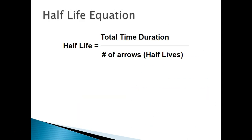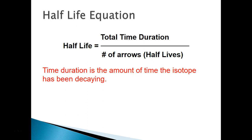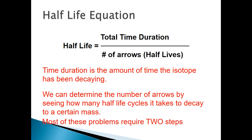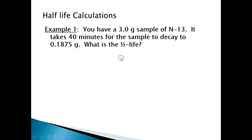Here is the equation for half-life: half-life equals total time duration divided by the number of half-life cycles (represented as arrows). The time duration is how long the isotope has been decaying. We determine the number of arrows by counting how many half-life cycles it takes to decay to a certain mass. Most problems require two steps: plugging numbers into the equation and figuring out how many half-life cycles occurred.